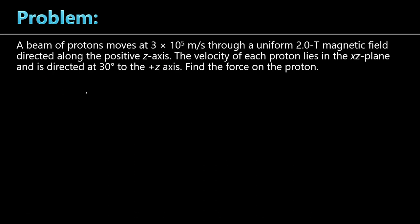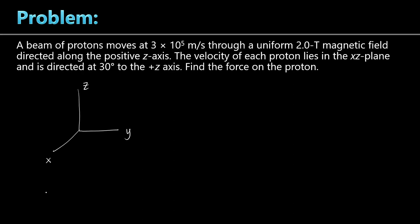To solve this problem, we first draw a three-dimensional Cartesian coordinate system with X, Y, and Z axes. Then we plot the vectors. We have the velocity, and that velocity is in the XZ plane. The magnetic field is directed along the positive Z axis, so we place the magnetic field vector B along the positive Z axis.